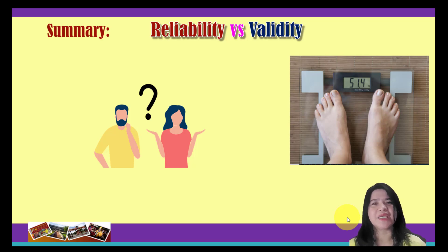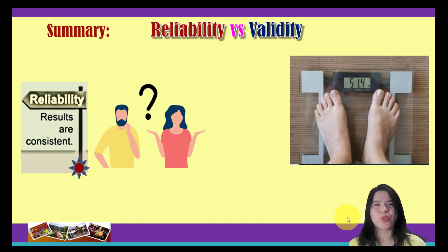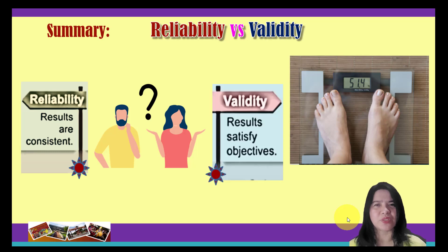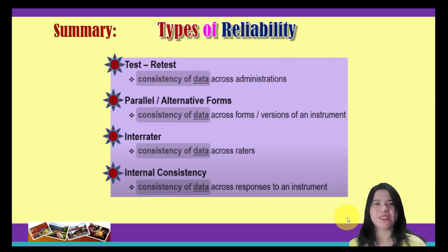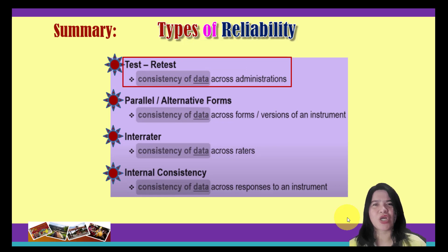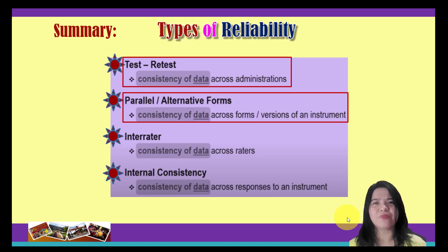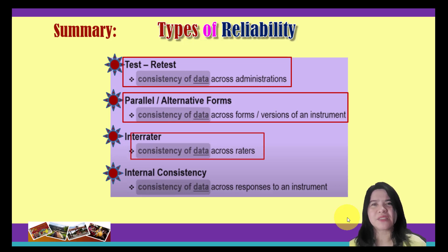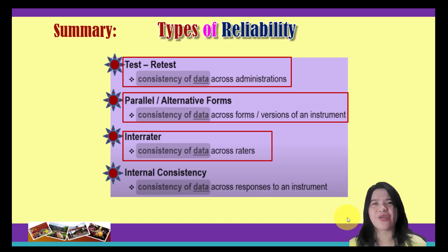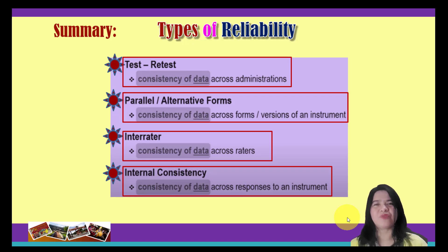In summary, reliability is established when the data collected are consistent, and validity is established when there is truthfulness in the results as it satisfies the objectives of what we are measuring. The four common types of reliability are: test-retest reliability, for consistency across administrations; parallel or alternative forms, for consistency across forms or versions; inter-rater reliability, for consistency across raters; and internal consistency, for consistency across responses to an instrument. That's all for our lesson on reliability.